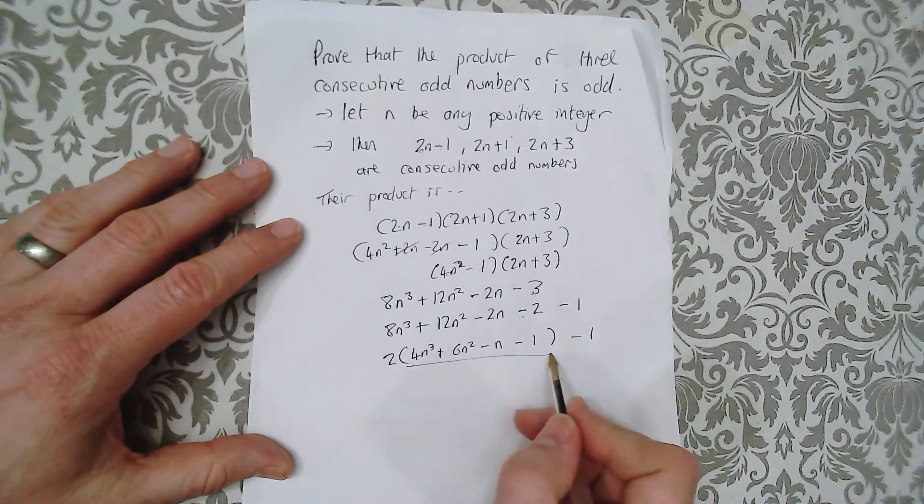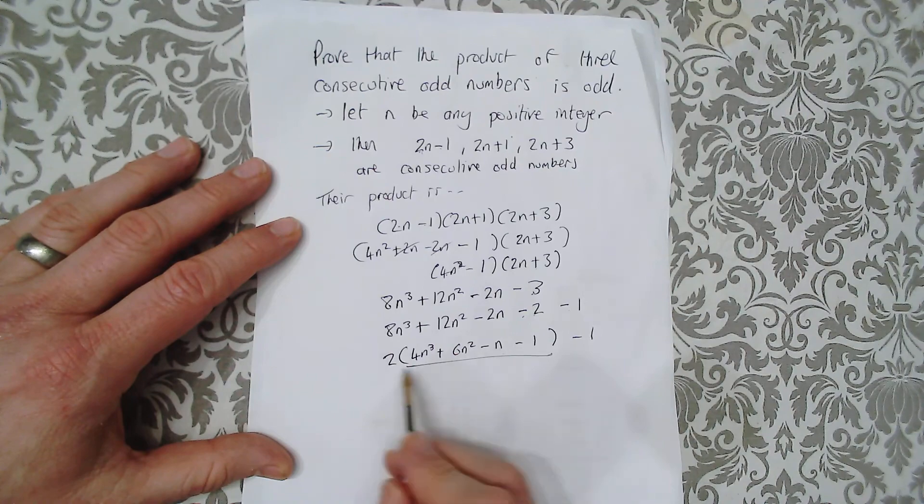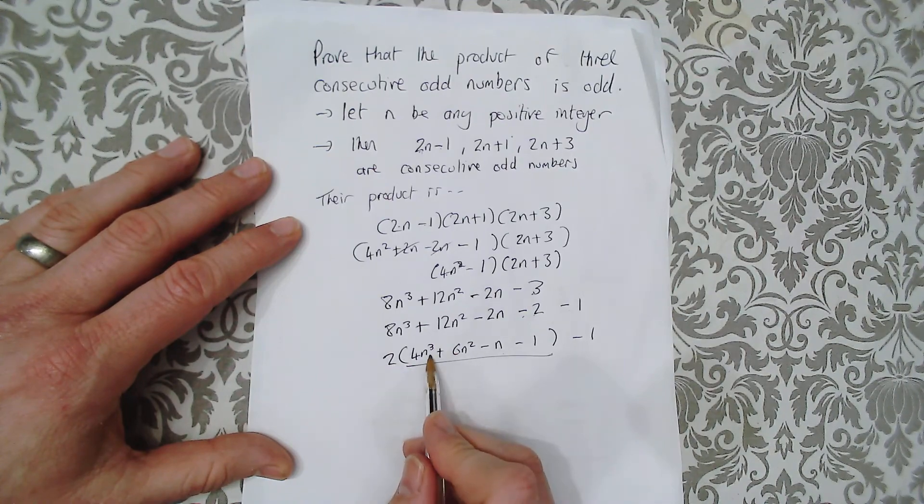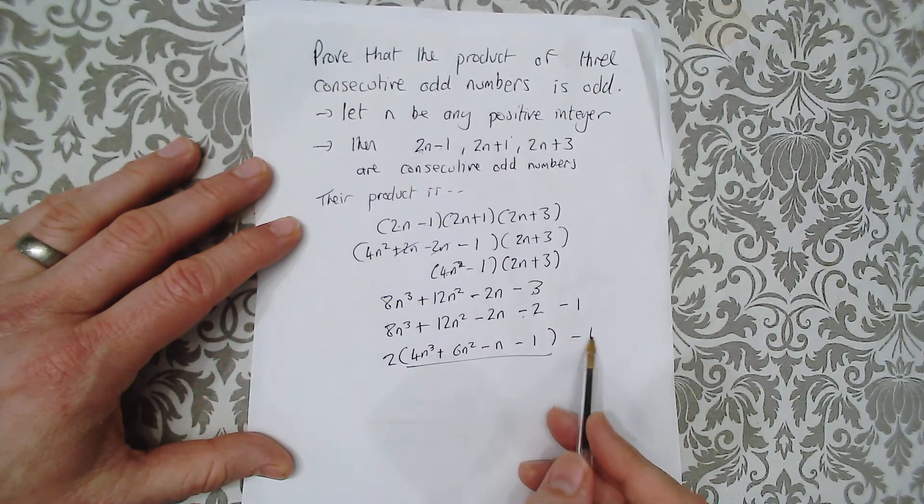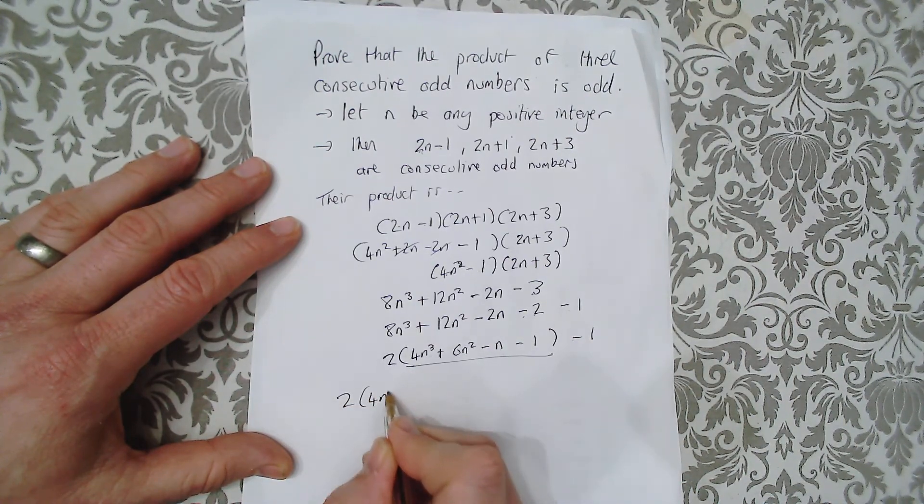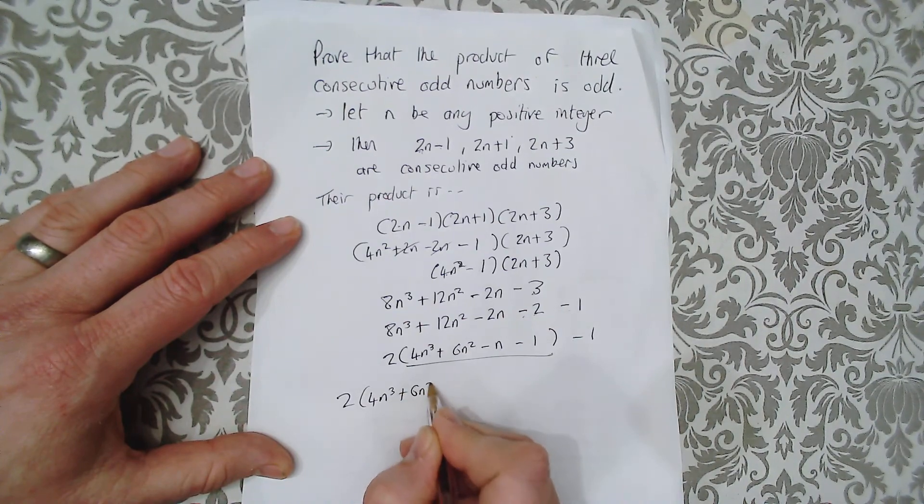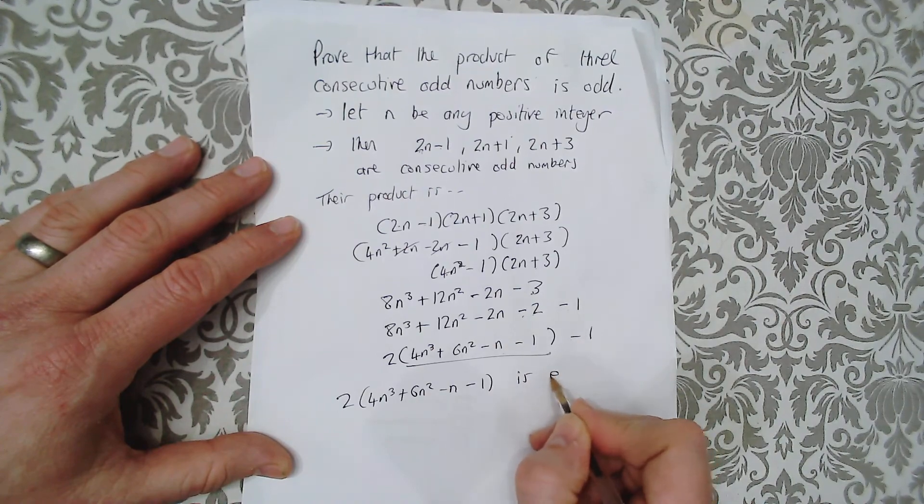Now this has got to be an integer, because n is an integer. So 2 lots of 4n cubed plus 6n squared, take away n, minus 1 is even.